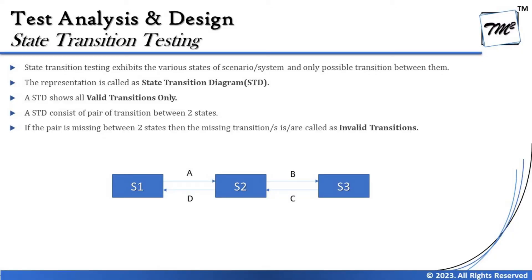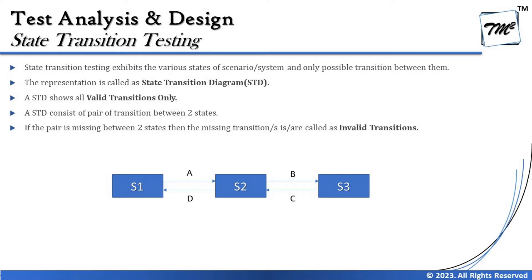With some examples it makes more sense. State transition testing exhibits the various states of a scenario or system and displays the possible transitions between them. State transition testing is done with the help of a state transition diagram (STD), which is a pictorial representation displaying the various states and only the possible transitions between them. Invalid transitions should not be displayed in the STD, because if displayed they become valid.